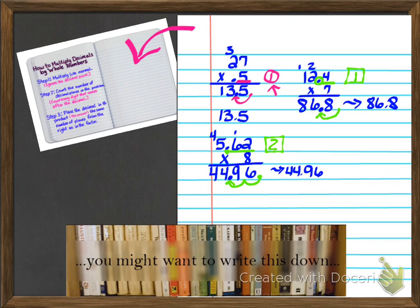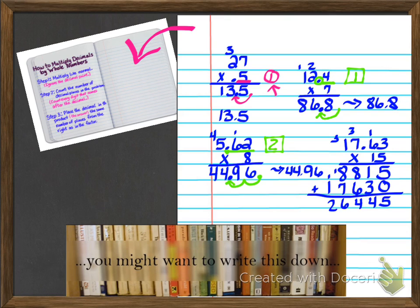Actually, we're going to do one more example because I want to show you one where we're multiplying by a double-digit number, which does not change any part of the process. So let's do 17.63 times 15. Go ahead and pause the video and give this a try, all the way until you can place the decimal point. If you did your multiplication correctly, you got 26,445. I locate the decimal in my problem — two numbers come after it — so I swoop in two spots and place the decimal between the fours, giving a final answer of 264.45.